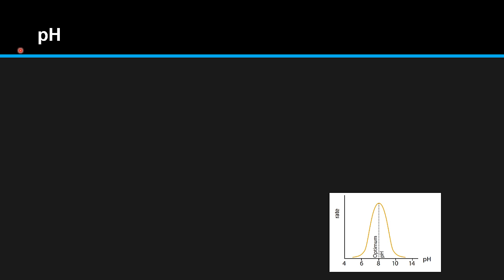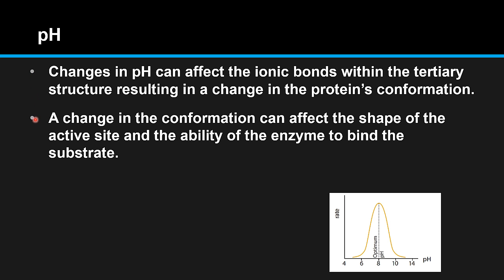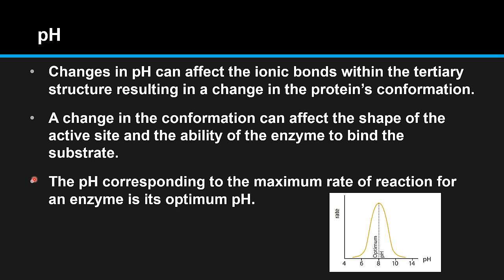The next factor that affects enzyme action is pH. Changes in pH can affect the ionic bonds within the tertiary structure, resulting in a change in the protein's conformation. A change in conformation can affect the shape of the active site and the ability of the enzyme to bind the substrate. The pH corresponding to the maximum rate of reaction for an enzyme is its optimum pH.